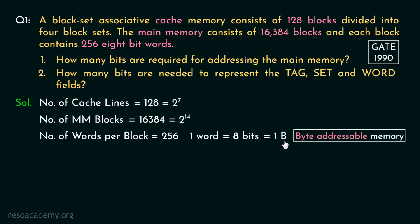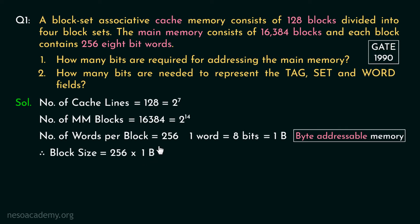Therefore we are dealing with a byte addressable memory. The size of the block can be determined by multiplying the number of words inside each block with the word size, which is 2 to the power 8 in terms of bytes, because 256 is 2 to the power 8.